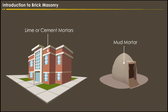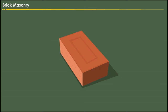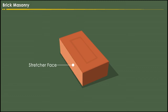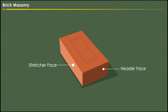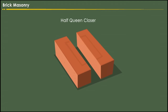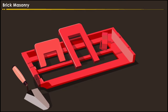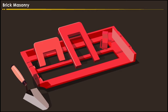Now let us discuss the bricks and different types of bonds in brick masonry in detail. The general size of the modular brick is 190 millimeters by 90 millimeters by 90 millimeters. The different faces of a brick include the stretcher face, the header face, and the half queen closure.